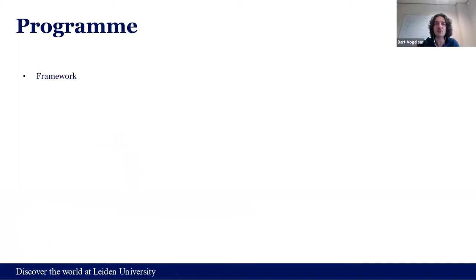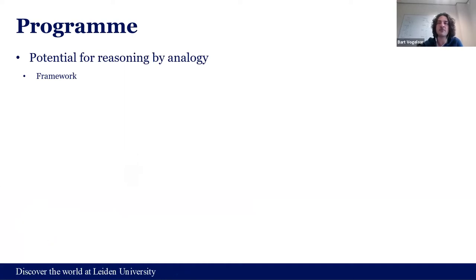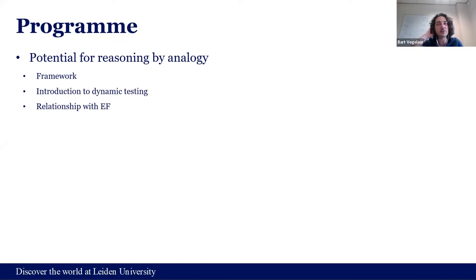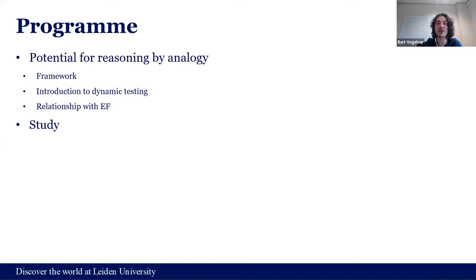So what's on today's programme? First of all, a short framework of measuring potential — what do we do when we measure someone's potential for learning and how is it different? The vehicle or instrument we use is something we call dynamic testing or dynamic assessment. I want to say something briefly about why it's important and how we do it, then talk about the relationship with executive functioning, and then discuss one of the studies we did in our lab investigating relationships between dynamic testing outcomes and executive functions. One of the most important questions is: does dynamic testing of analogical reasoning compensate for weaknesses in executive functions?